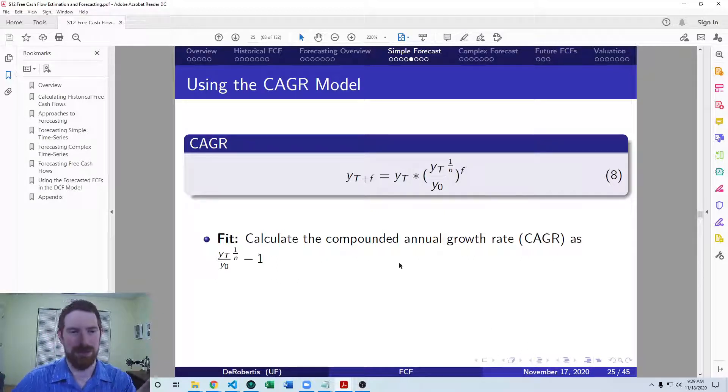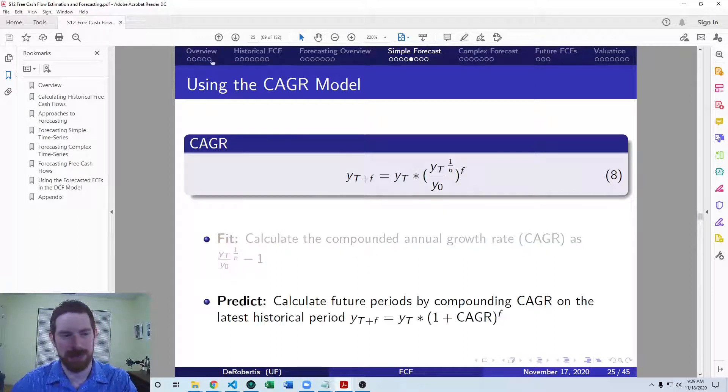You do that by taking your most recent value and dividing it by the earliest value that you have. Taking all of that to the one over number of periods power. So that would be how many periods are in between that beginning of the historical data and the end of historical data. You raise that fraction to that power, and then you subtract one, and that's going to get you the compounded annual growth rate, or how much should the growth rate have been in each period to grow as much as it did over the entire range of the historical data.